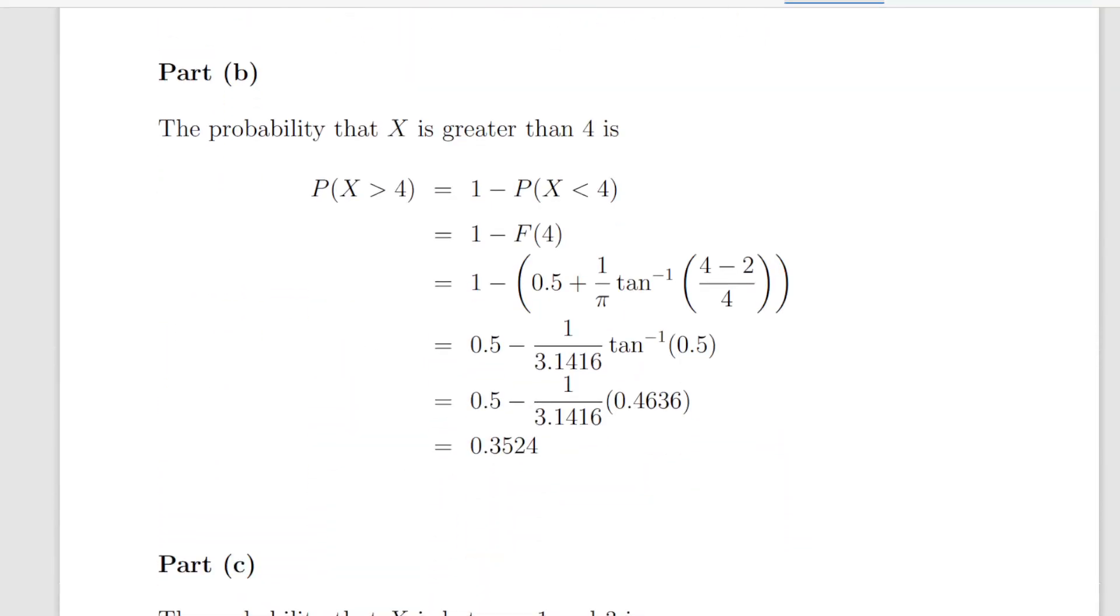Now, the probability that X is greater than 4, that is the complement of the cumulative distribution of 4. 1 minus the cumulative distribution of 4. So, straightforward enough, really. We have 1 minus this expression here, 0.5 plus 1 over pi times tan to the minus 1 of 4 minus 2 divided by 4. So, when you resolve that, we get 0.5 minus 1 over 3.1416 times tan to the minus 1 of 0.5. The arctan of 0.5. 4 minus 2 divided by 4 is 2 divided by 4, 0.5.